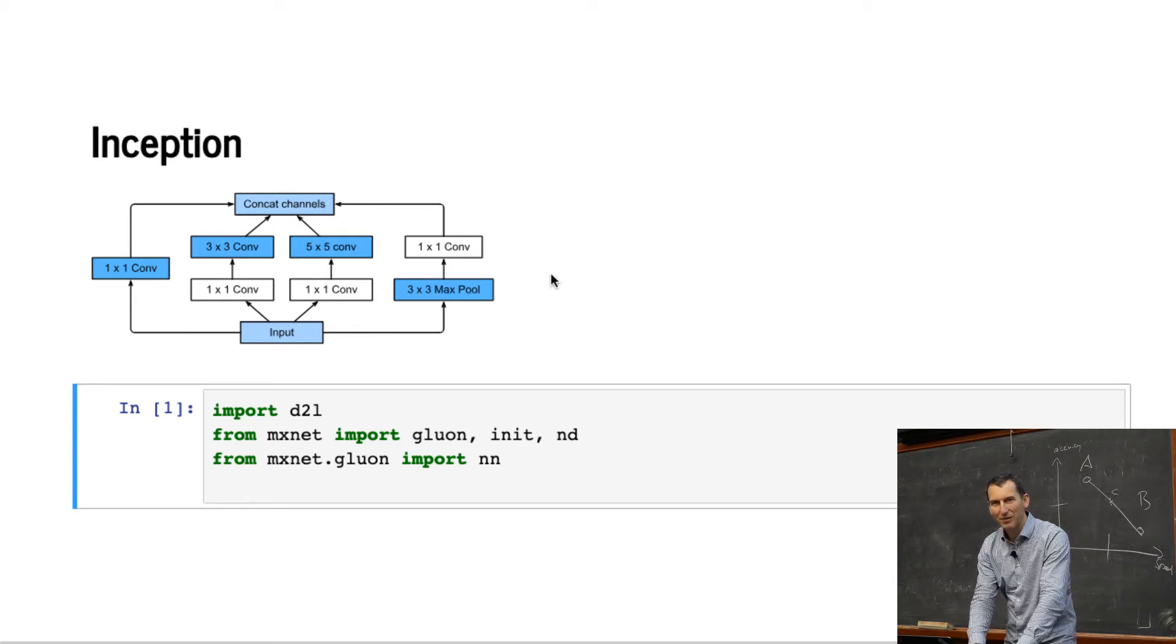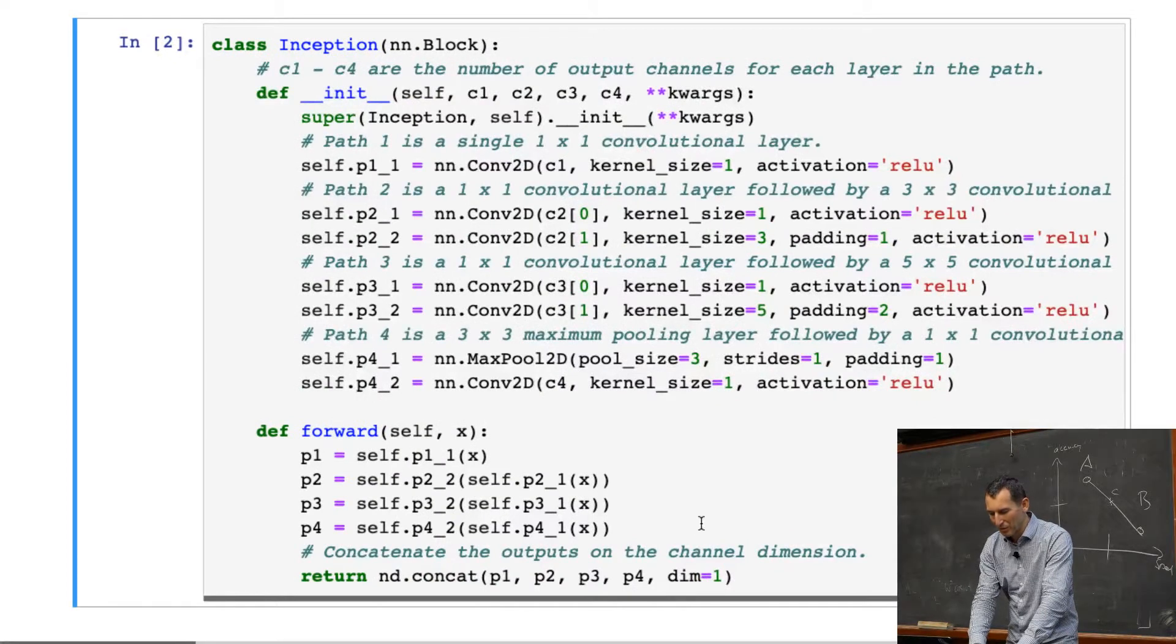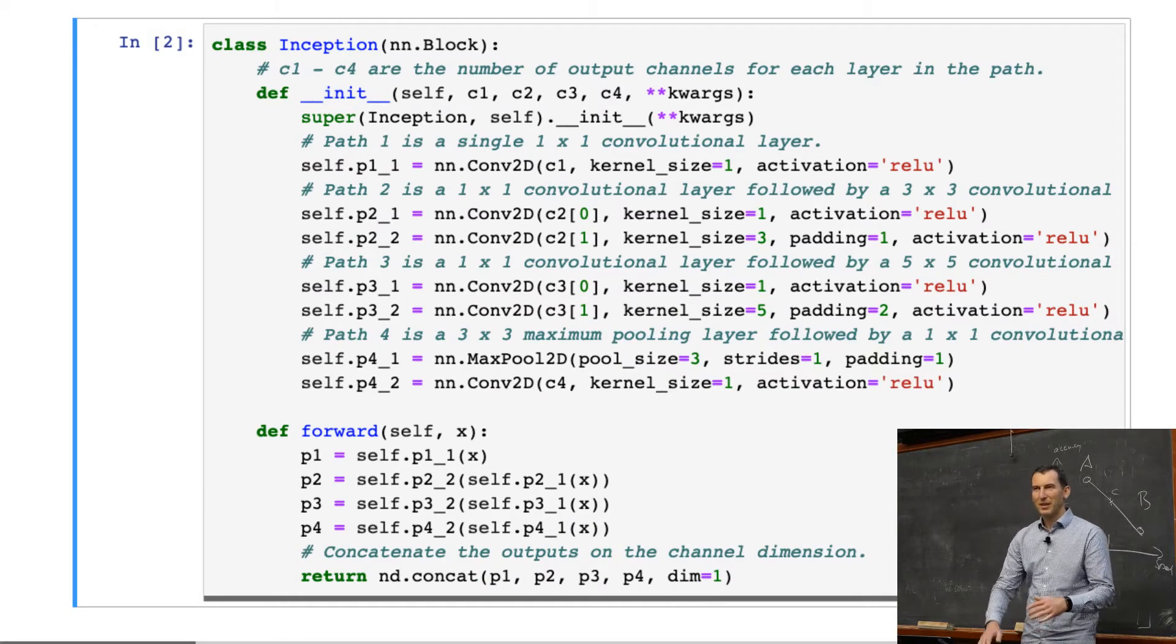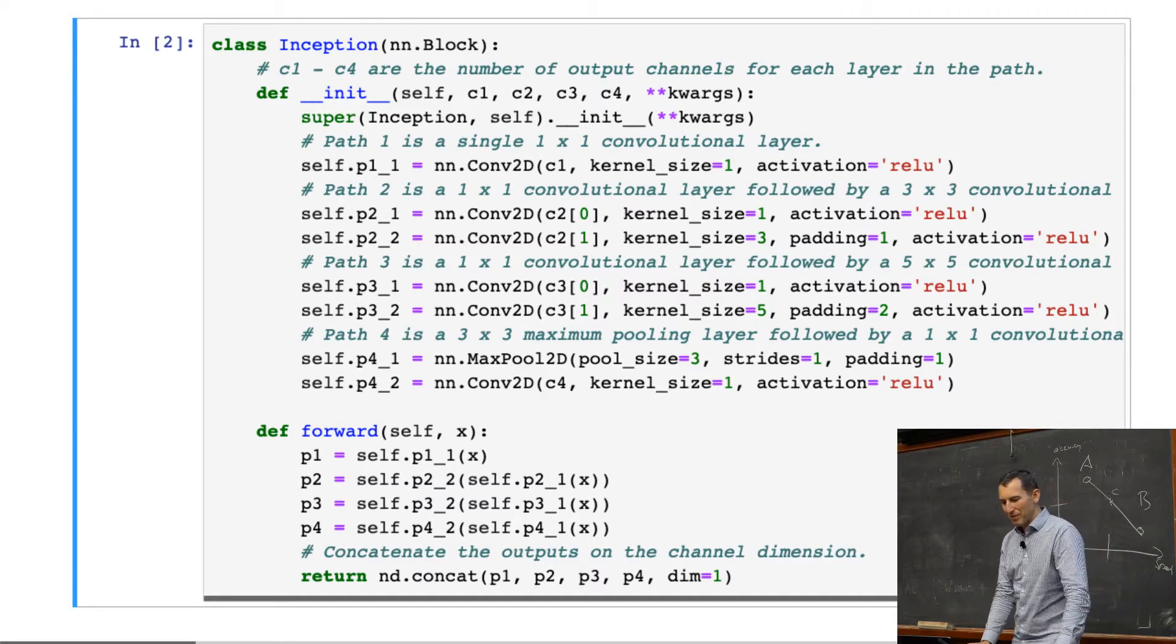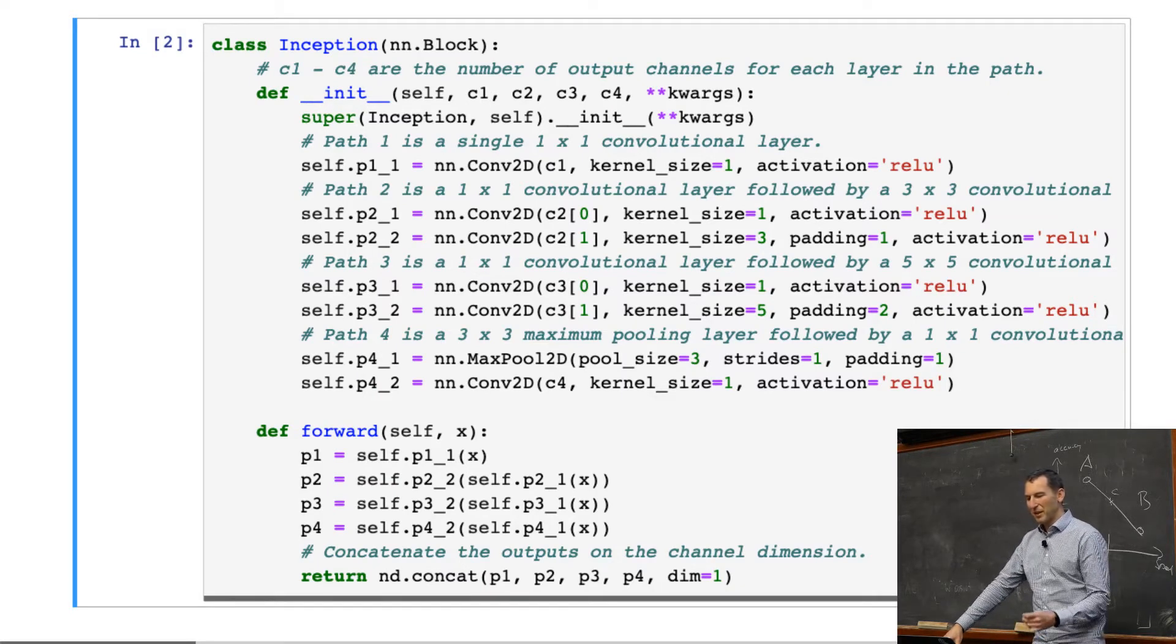But here's the basic inception block. This is the basic inception block now written out as code. And here we are going to encounter for the first time a parallel composition of various paths. This is now where we don't have just a simple add a block, add a block, but we actually have to do a little bit of work to instantiate this.